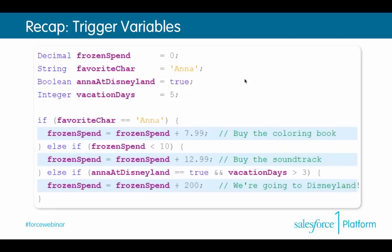We also talked about trigger variables — how to use trigger variables like string, Boolean, and integer to return information. We used these to evaluate an if statement for how much David spent on frozen merchandise. The answer was $7.99. A lot of people got this one wrong because they wanted to add up $7.99 plus $12.99 plus $200, but with if/else if statements, we only catch the first clause — that's why the answer was just $7.99.